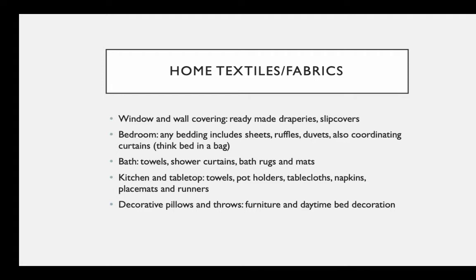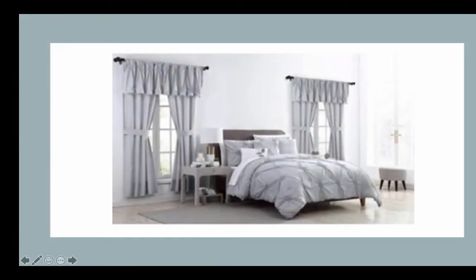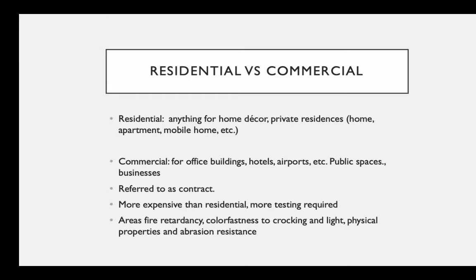For bath, this includes towels, shower curtains, bath rugs, and mats. For kitchen and tabletop we're talking about kitchen towels, pot holders, tablecloths, napkins, placemats, and table runners, which are very common. Decorative pillows and throws are under the decorative furnishings category. You see a lot of coordination with bedroom sets — mixing small and large prints while keeping the same color foundations.